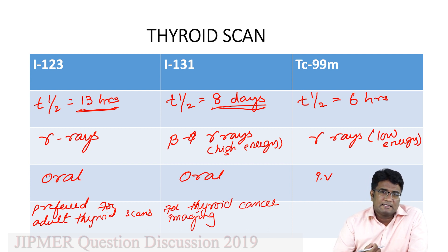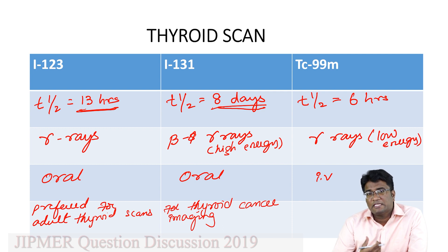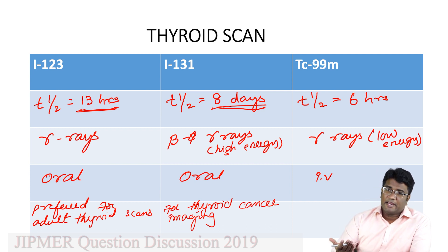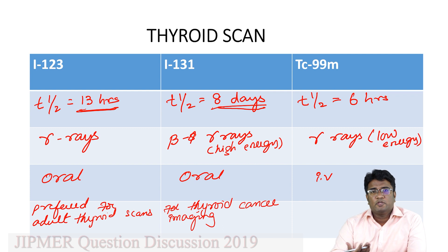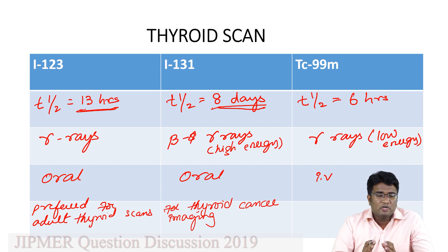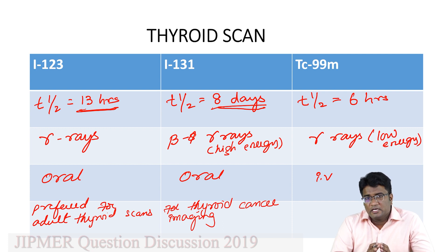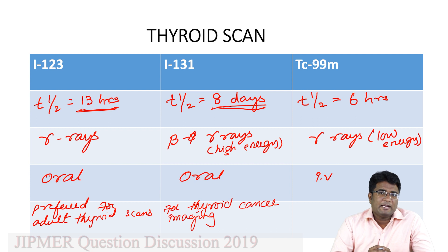After seven days we can again evaluate the status of thyroid metastasis. Because iodine 131 treats thyroid cancer cells by producing beta rays, it can be used for thyroid cancer imaging. Because of the half-life of eight days, we can use it even at the end of the seventh day after injection to assess the status of thyroid cancer metastasis.